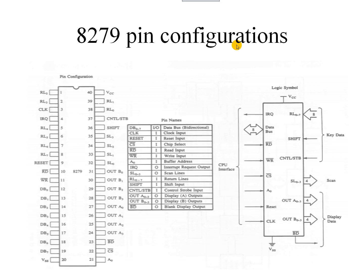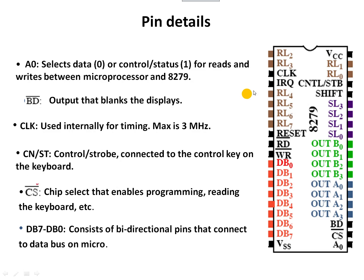The 8279 pin configuration details can be seen in the following slides. The A0 pin selects whether the DB0 to DB7 data bus lines are used as data input or as a controller status word. This controller status word is used for read and write operations with the microprocessor and peripherals. The 8279 acts as a central processing unit for handling keyboard and display operations.